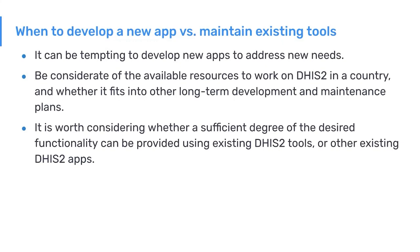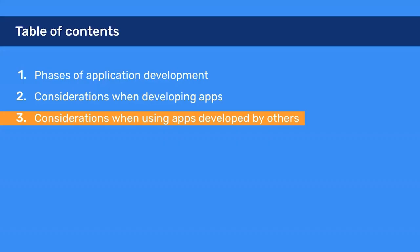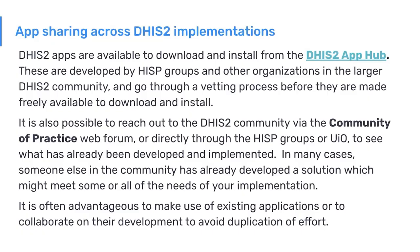Next, we'll discuss considerations for using applications developed by others. DHIS2 applications are available for download and install from the DHIS2 App Hub. These are developed by organizations such as HISP groups and non-governmental organizations and go through a vetting process before being made freely available. It's also possible to reach out to the DHIS2 community to see what has already been developed. In many cases, someone else has already developed a solution which might meet some or all of the needs of your implementation, and it's advantageous to collaborate to avoid duplication of effort.